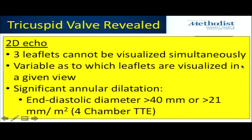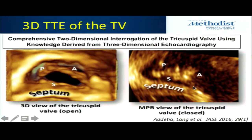In 2D, it's very difficult to visualize the three leaflets simultaneously, and difficult to know which leaflet is in any given view, with the exception of those specialty images. What do we call significant dilation? We heard this morning about 40 millimeters in the four-chamber view, or indexed at 21 millimeters per square meter — 40 millimeters is basically the benchmark most use for determining annular dilation.